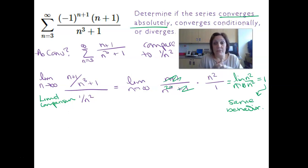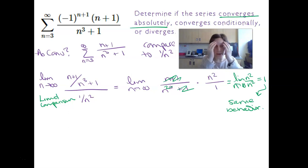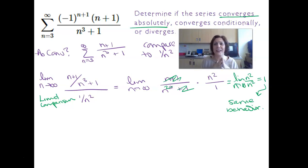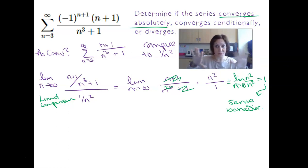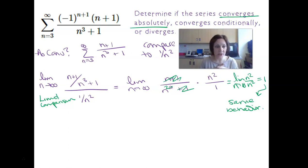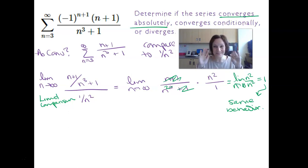That is all of the tests we have. The only other thing we're going to start looking at — the last thing we have to do with series — is looking at series where there's also an x involved. All the series we've been looking at have only had n in them, so the question was just converge or diverge. Once there's an x involved, that becomes a more complicated question, which we'll address in the last video. As of this moment, your flowchart should be completely filled out.